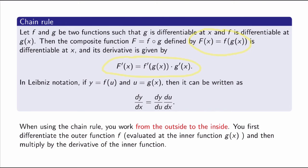In Leibniz notation, if y = f(u) for the outer function and u = g(x) for the inner function, then the chain rule is: dy/dx = (dy/du) · (du/dx). It's easy to remember because it looks like the du's cancel on the right-hand side — though of course these are derivatives, not actual quotients.